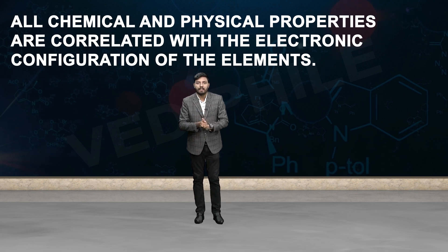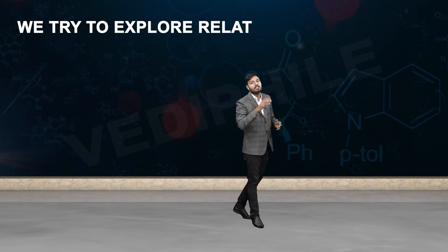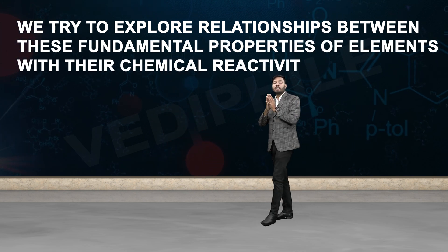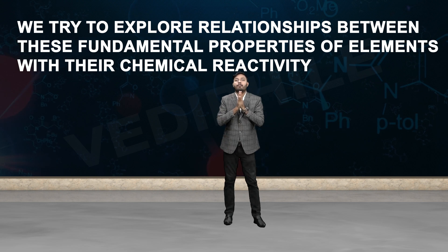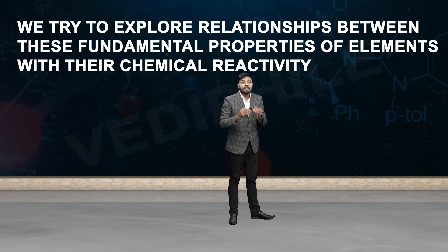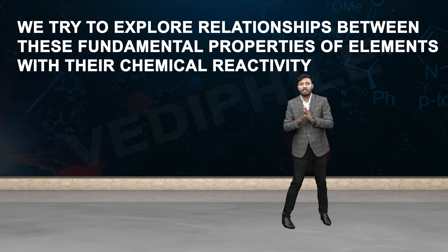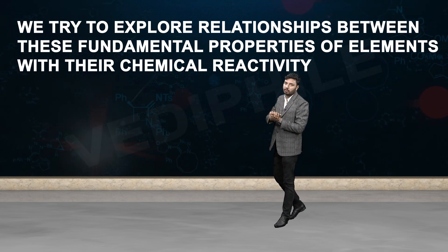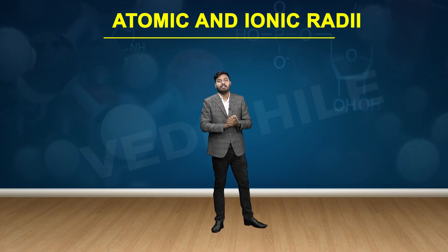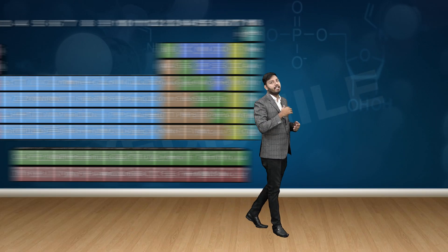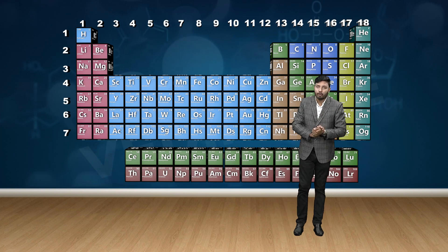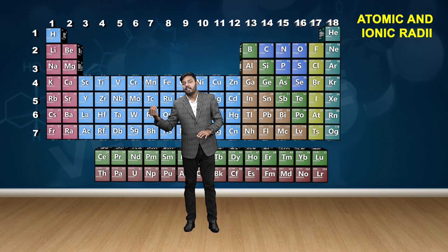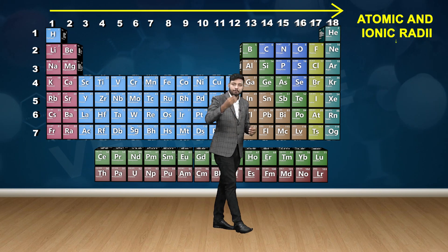Now we try to explore the relationship between these fundamental properties of elements and their chemical reactivity. We are looking at chemical reactivity in relation to the elements. Atomic and ionic radii generally decrease in a period from left to right.